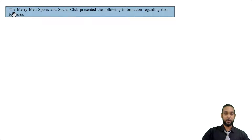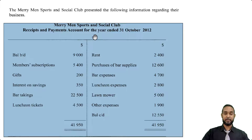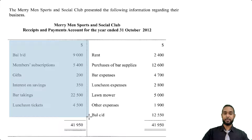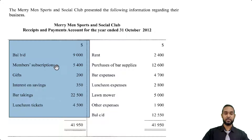Okay, as per usual we'll take a read of the question. It says the Merry Men Sports and Social Club presented the following information regarding their business. The first thing they give us is a receipts and payments account. This item is on the current CSEC POA syllabus — it is simply a cash account, a bank account, or a single column cash book. The debit side records receipts — money coming in. So it's an asset account: debits increase, credits decrease. There's a regular opening balance of nine thousand, and subscriptions which are membership fees.